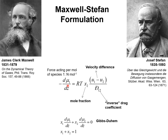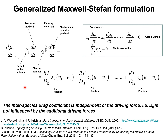Only one of the chemical potential gradients is independent because of the Gibbs-Duhem constraint and the fact that the mole fractions must sum to unity. This is the kernel of the Maxwell-Stefan diffusion formulation. The persuasive advantage of this formulation is that it can be extended quite elegantly to much more general types of situations.